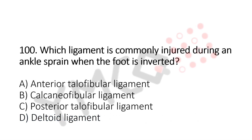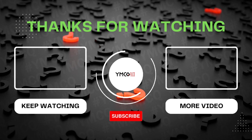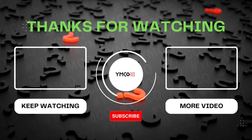Which ligament is commonly injured during ankle sprain when the foot is everted? Option A: anterior talofibular ligament. Option B: calcaneofibular ligament. Option C: posterior talofibular ligament. Option D: deltoid ligament. And the answer is option A, anterior talofibular ligament. So that's all for today. If you have any doubts, please do mention in the comment box. See you in the next video — that's part 6. Till then, bye-bye and all the best for your exams. Thank you.